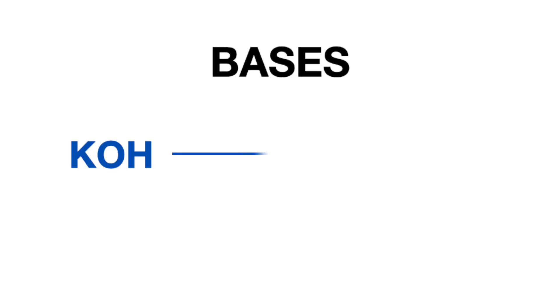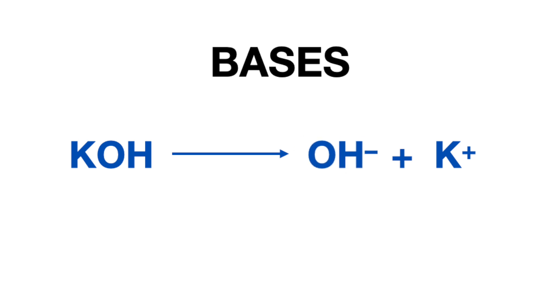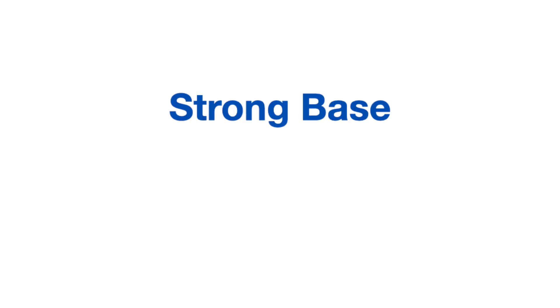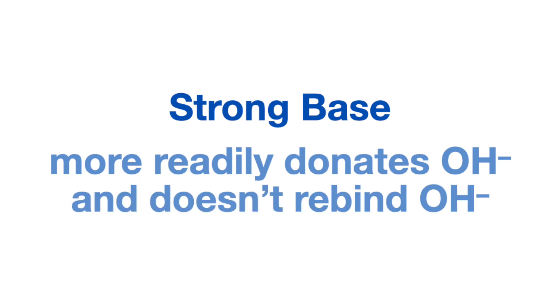Arrhenius bases are hydroxide donors, which simply means the basic compound will break a bond with the hydroxide and release it into solution, the hydroxide ion being the base. So a strong base is one that easily releases a hydroxide and doesn't reform a bond with it.